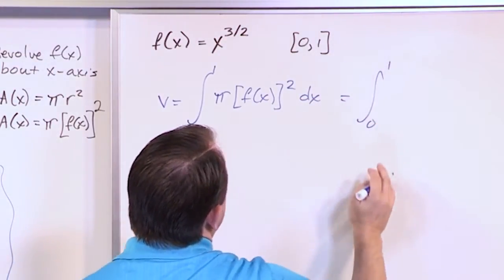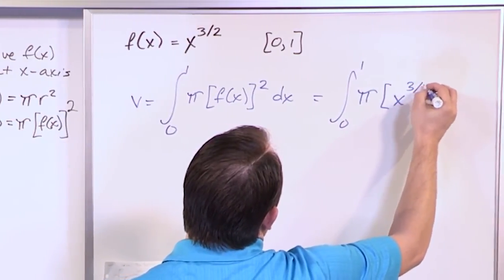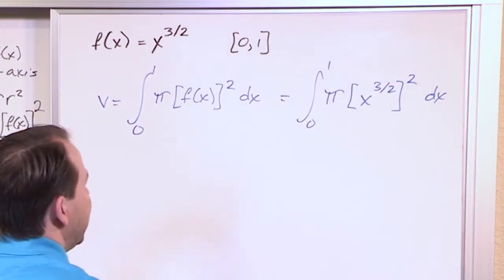Which will be the integral from zero to one of pi x to the three halves, that's f of x squared dx. And this is what I need to integrate.